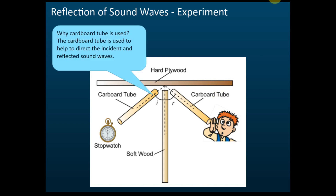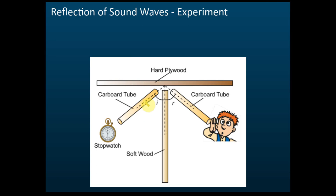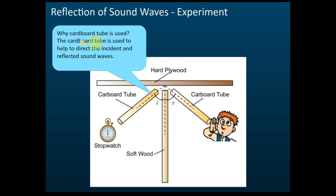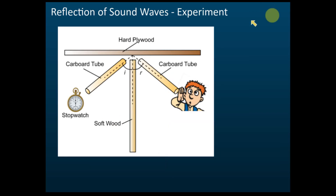The cardboard tube is used to help direct the incident and reflected sounds. So its function is to direct the sounds toward and away from the reflector properly.